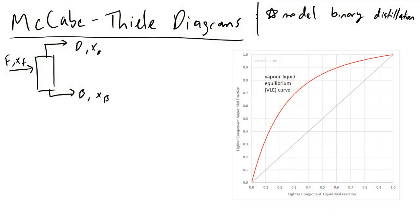McCabe-Thiele diagrams are used by chemical engineers to model the composition of the vapor and liquid mole fraction of a component in a distillation column. It's very important to note that we are dealing with binary systems — two-component systems.